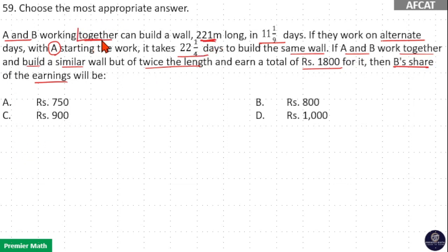When A and B work together, work completed in 1 day equals A plus B. But when A and B work alternately, work completed in 2 days equals A plus B. So 22 days work equals 11 days work.